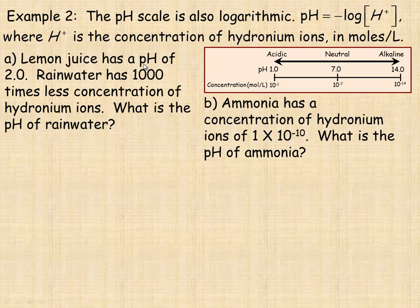In the first example, lemon juice has a pH of 2. And we're told that rainwater has 1,000 times less the concentration of hydronium ions. And we're asked to find its pH.